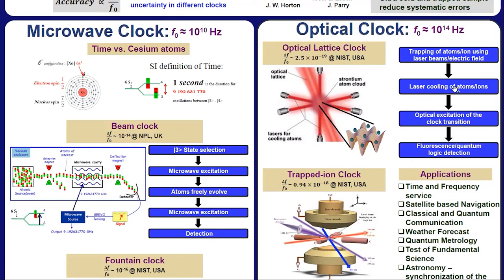After trapping, we laser cool the atoms or ions and then optical excitation is given for clock transition and finally fluorescence is detected.